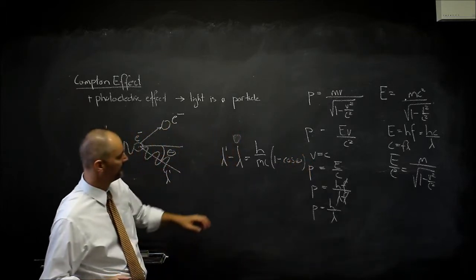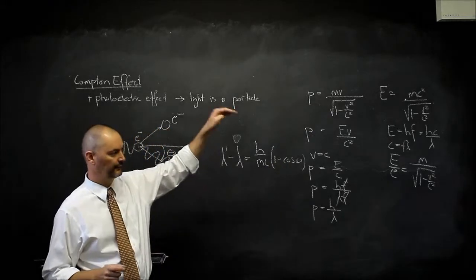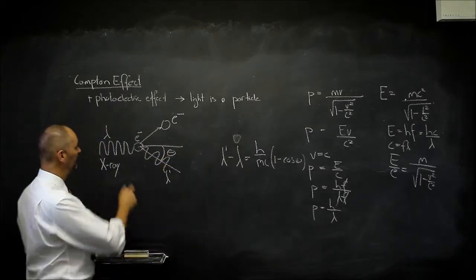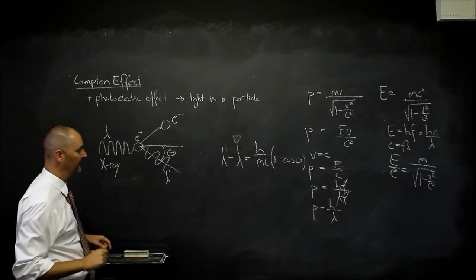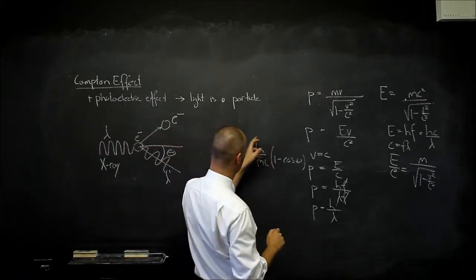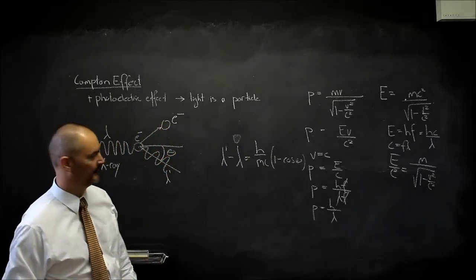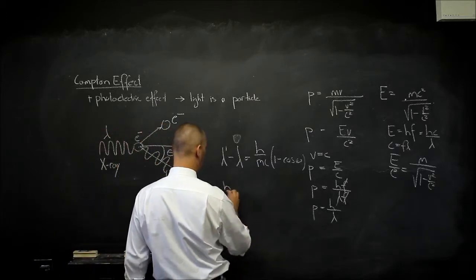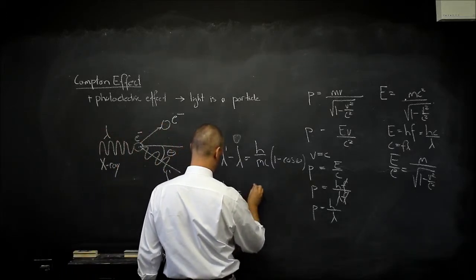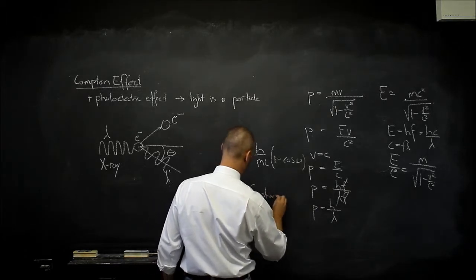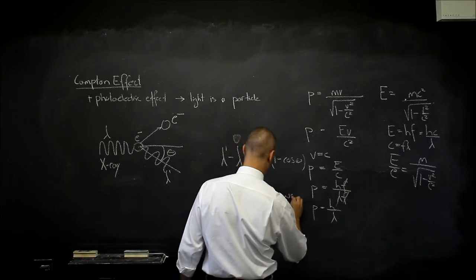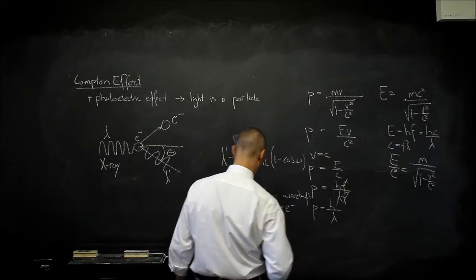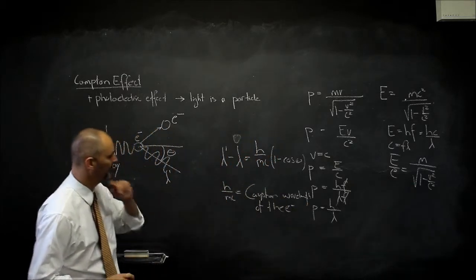The cosine varies between positive one and negative one. Negative one would mean 180 degrees for this angle, meaning the X-ray just rebounds completely. The h over mc term — the mass we are dealing with is the mass of the electron. This h over mc is known as the Compton wavelength of the electron, where we use the mass of the electron.